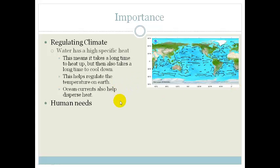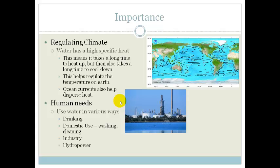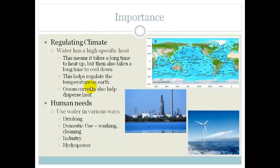Then, water is essential for humans. We use it in various ways. First of all, drinking—most important. Then we use it domestically, such as washing and cleaning. We also use it in industry and in hydropower. Hydropower is only slowly coming into use now, but it will eventually be used a lot because it's a huge source of power.